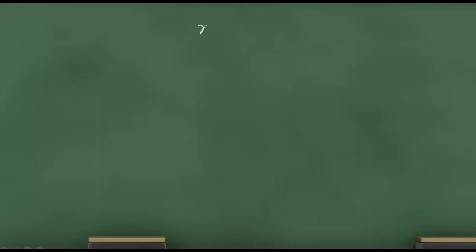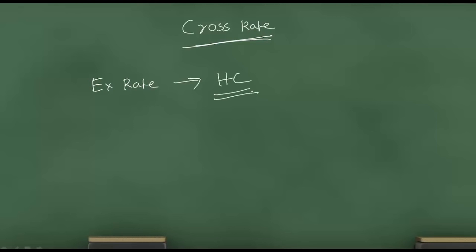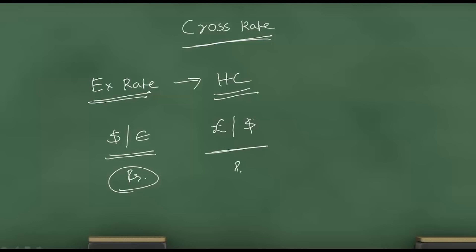Let us understand what is cross rate and what is cross multiplication. Cross rate is basically an exchange rate which will not talk about the exchange rate of home currency. Say for example, I reside in India and I talk about an exchange rate that does not have my home currency — such as dollar per euro or pound per dollar. These are exchange rates which do not involve my Indian currency called rupees. So these rates are called cross rates.